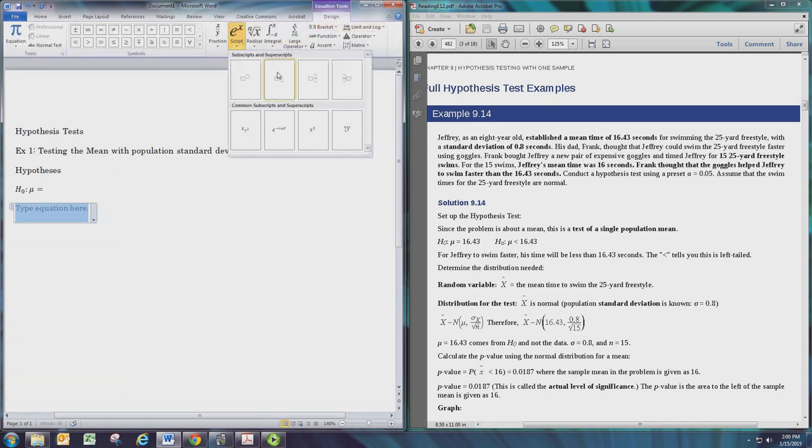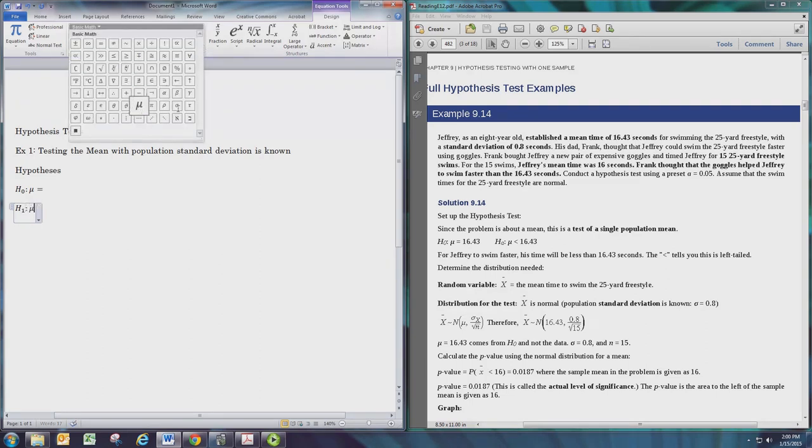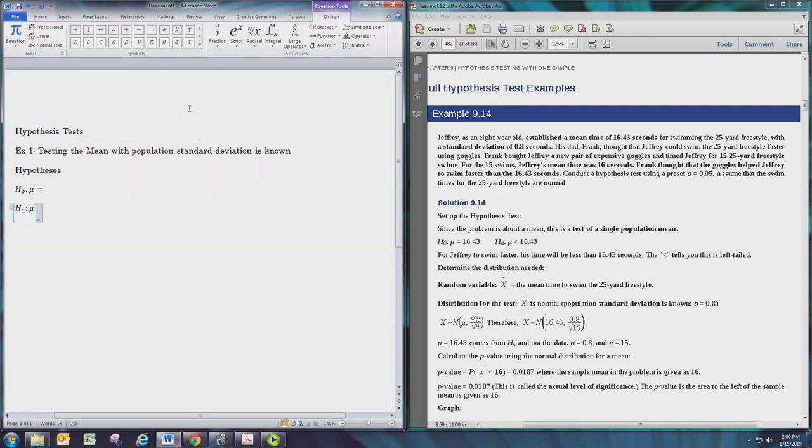For the alternative you can do H with a subscript of 1 or with a subscript of a. Again we'll use the Greek letter mu. To determine the inequality sign in the alternative hypothesis we need to figure out the claim.